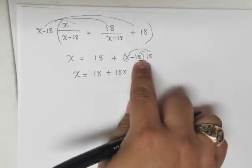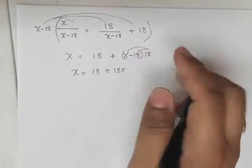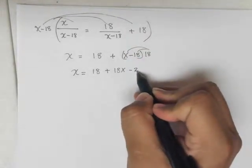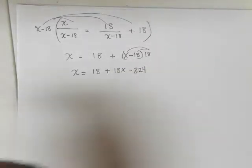And what is negative 18 times 18? 324. There it is. So negative 324.